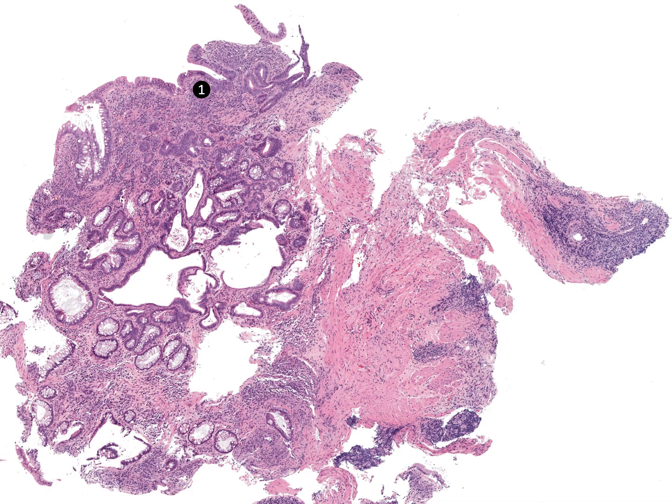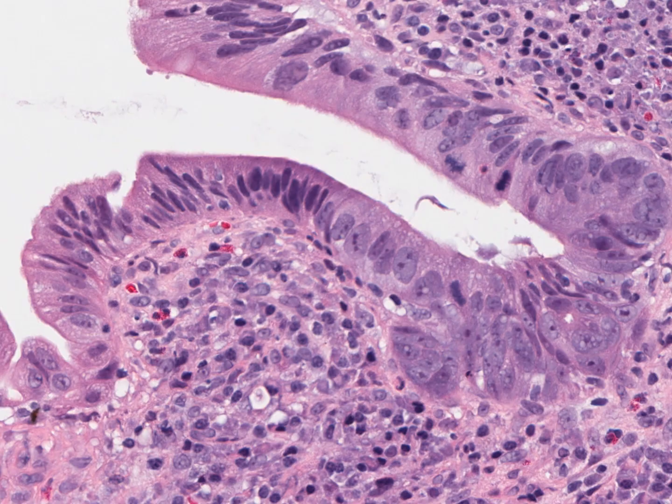Conventional dysplasia arising in IBD is a morphologic diagnosis. Conventional dysplasia resembles sporadic adenoma epithelium morphologically, showing nuclear atypia, loss of polarity, and architectural distortion.